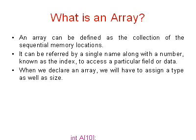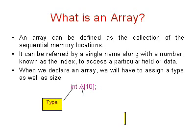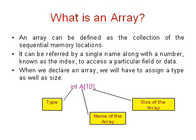Whenever we declare an array we have to assign the type as well as the size. For example, here we have taken int a[10]. So here integer is the data type, a is the name of the array, and 10 is the size of the array. So this array will contain 10 integer data.